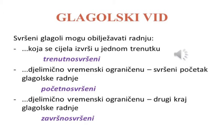Mahnuti. Dijelimično vremenski ograničenu – svršeni početak glagolske radnje – to je početno svršeni: zapjevati, progovoriti, zazvoniti. Dijelimično vremenski ograničenu – drugi kraj glagolske radnje – to je završno svršeni. Na primjer: dotrčati, popiti, pročitati.